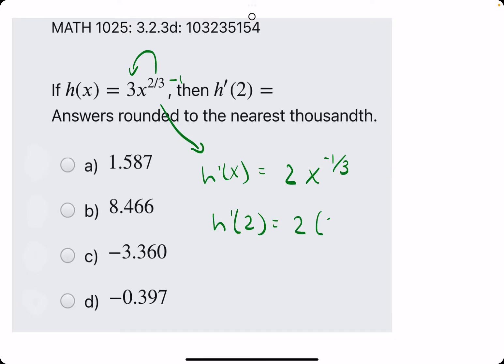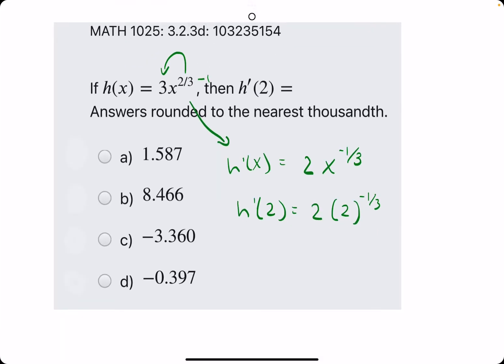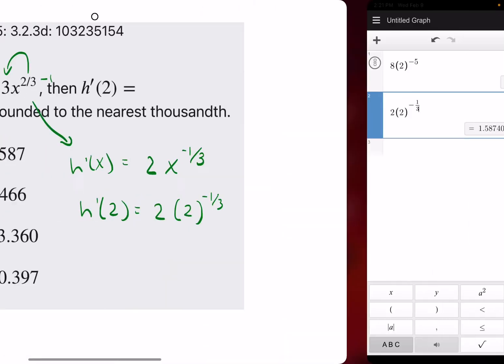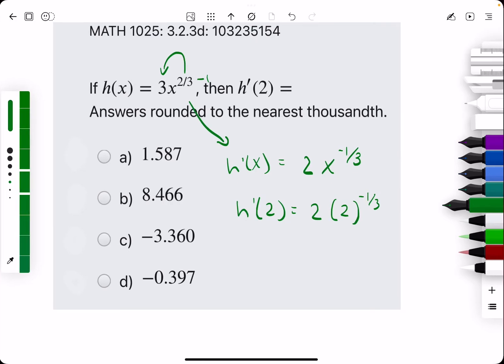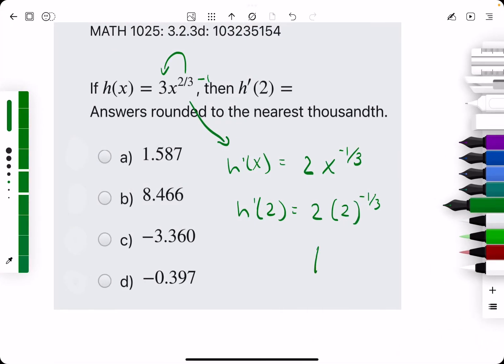Now plugging in 2, we have 2 times 2 to the negative 1/3. So keep in mind, we want to do 2 raised to the negative 1/3 first, then multiply by 2. So here we should be able to type it all in. And that will give us 1.59 or 1.6. Actually, they just cut it off at the thousandth place. So 1.587 is our answer.